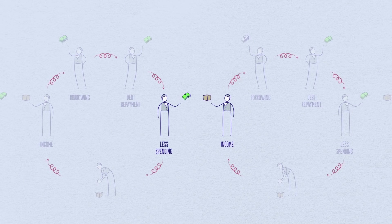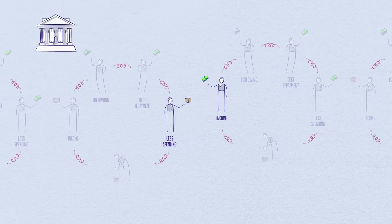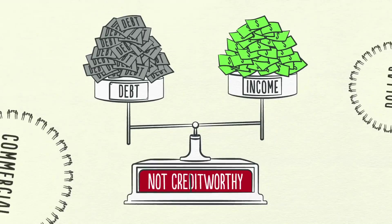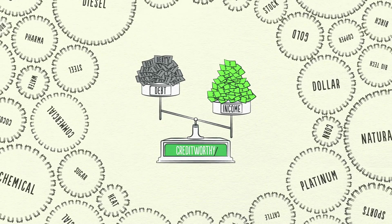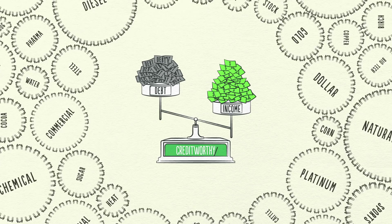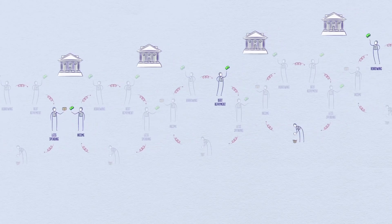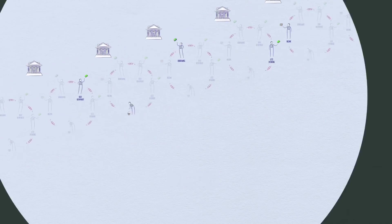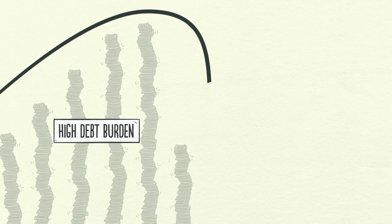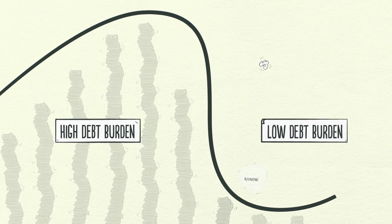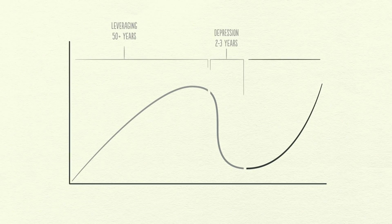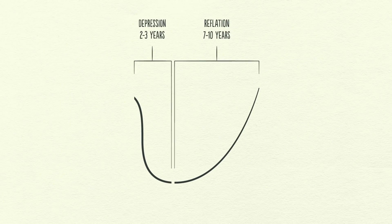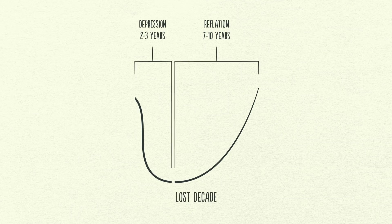When incomes begin to rise, borrowers begin to appear more creditworthy. And when borrowers appear more creditworthy, lenders begin to lend money again. Debt burdens finally begin to fall. Able to borrow money, people can spend more. Eventually, the economy begins to grow again, leading to the reflation phase of the long-term debt cycle. Though the deleveraging process can be horrible if handled badly, if handled well, it will eventually fix the problem. It takes roughly a decade or more for debt burdens to fall and economic activity to get back to normal — hence the term lost decade.